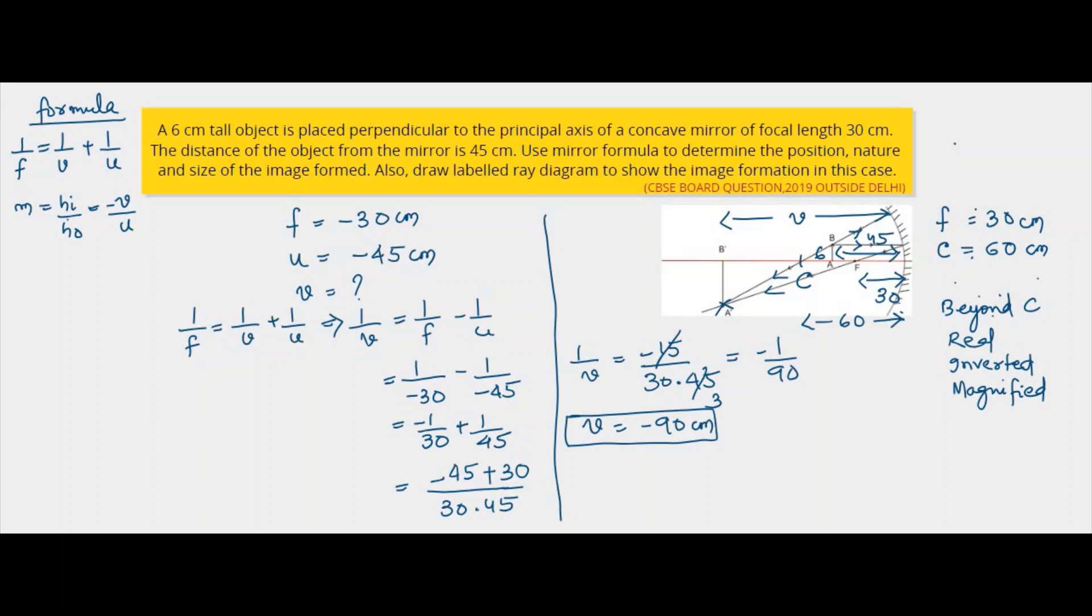So next we have to find out the nature and size. So using the magnification formula, HI by HO is minus V by U. HI is unknown, HO is 6, which is negative.